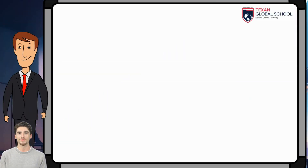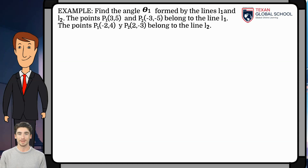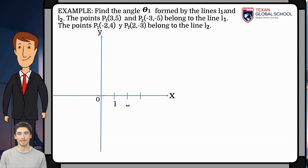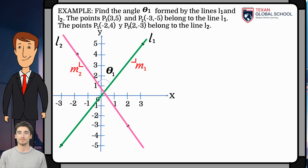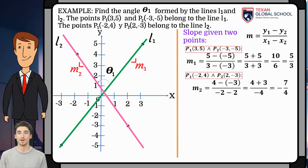In this other example, find the angle theta1 formed by the lines l1 and l2. The points (3, 5) and (-3, -5) belong to line l1. The points (-2, 4) and (2, -3) belong to line l2. First, graph, then identify the angle that is requested. For angle theta1, the initial line is l1 and its final line is l2 as indicated. Calculate the slopes of both lines given two points using the formula seen in previous classes. For l1, its slope is equal to 5/3. For line l2, its slope is -7/4.